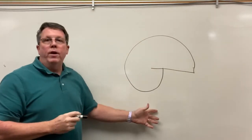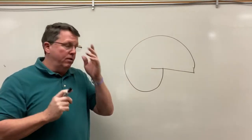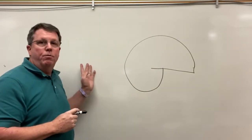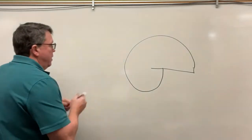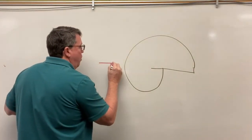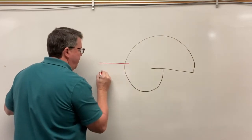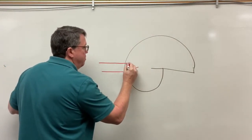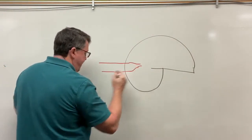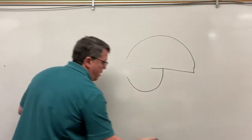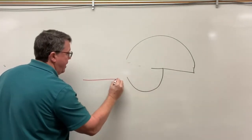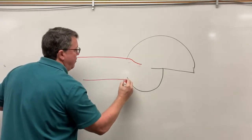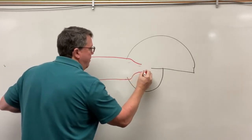Blood to the brain actually comes from the neck up into the head. I'm drawing an artery coming in, which is fairly wide, and then the blood vessel gets smaller as it branches further into the brain.